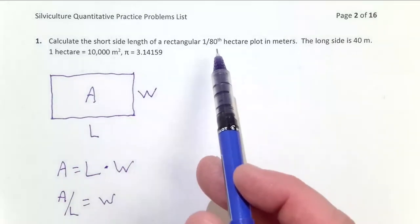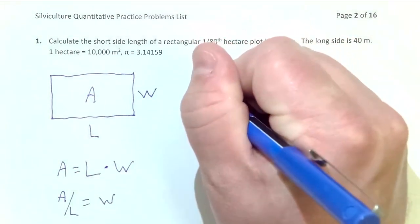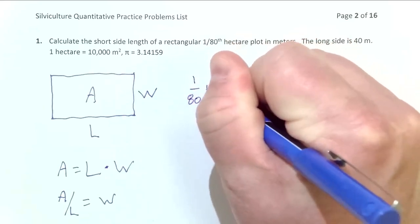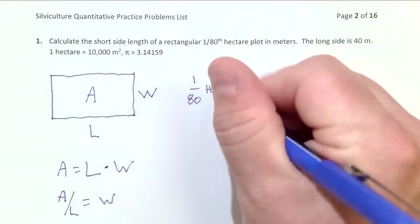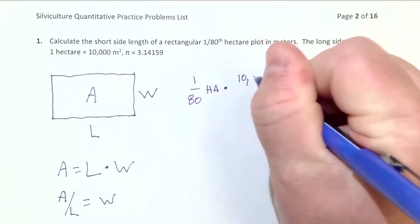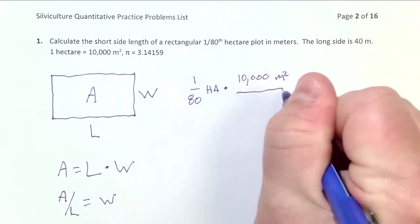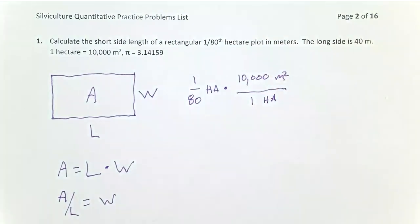Now we've been given the area of this plot in a fraction of a hectare. And the side length that we want needs to be in meters. So we'll need to convert that. So I'm going to start here with a 1/80th hectare plot. And I know my conversion, it's written right up here, is 10,000 meters squared per one hectare.